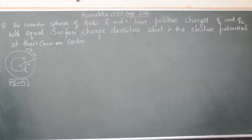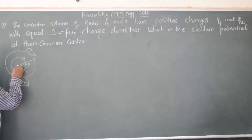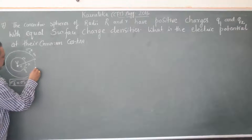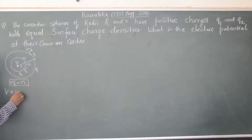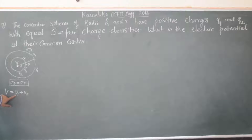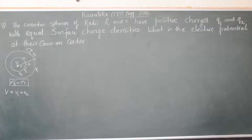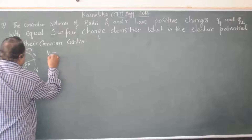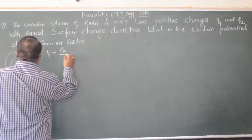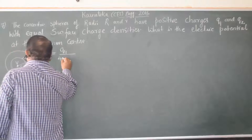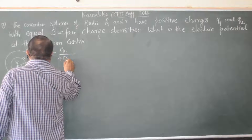The question is: what is the electric potential at their common center? Let V1 be the electric potential of the outer sphere and V2 be the electric potential of the inner sphere. Then the total electric potential due to both spheres is V1 plus V2. V1, the potential due to the sphere of radius R with charge Q1, is Q1 divided by 4πε₀R.